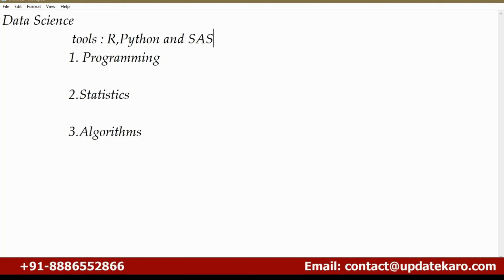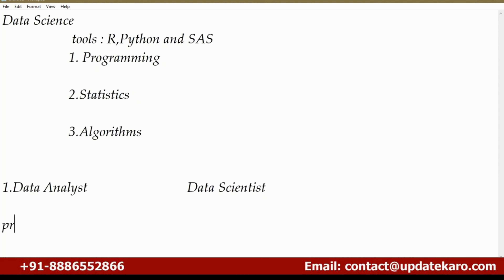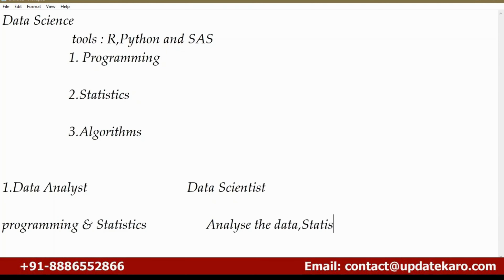If you are learning data science, you will be able to go with two different designations: one is as a data analyst and the other one is as a data scientist. When you are dealing with a data analyst position, you have to know some things related to programming and statistics. When you are moving as a data scientist, you should know how to analyze data, statistical concepts, and machine learning — that is, algorithms.